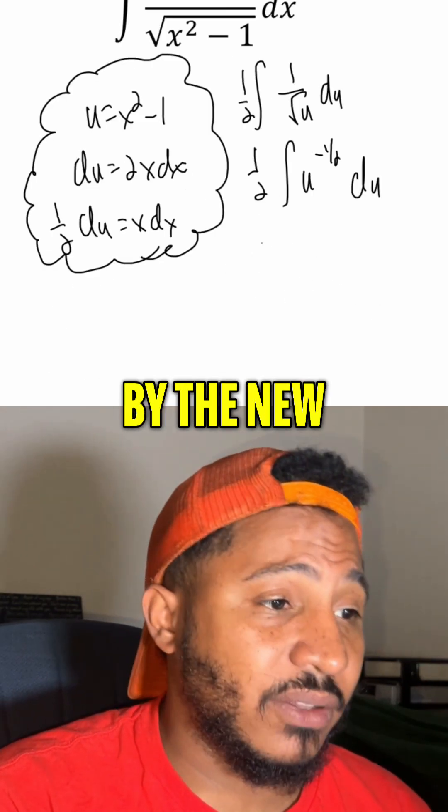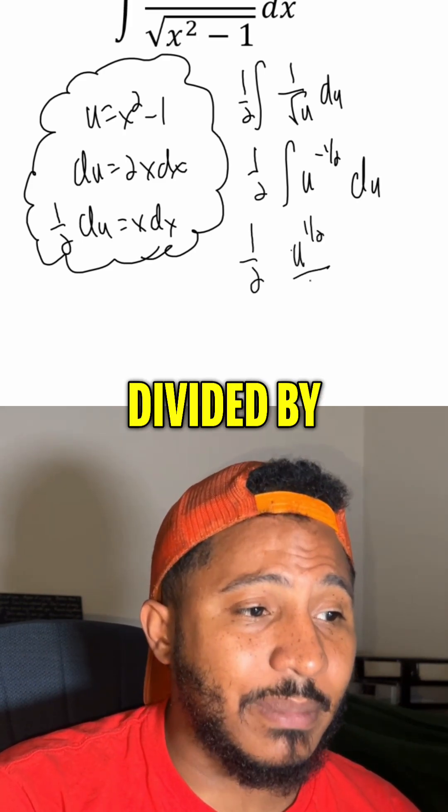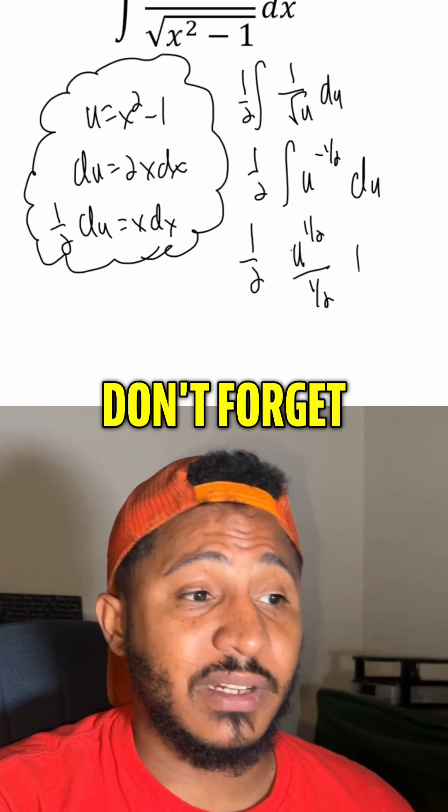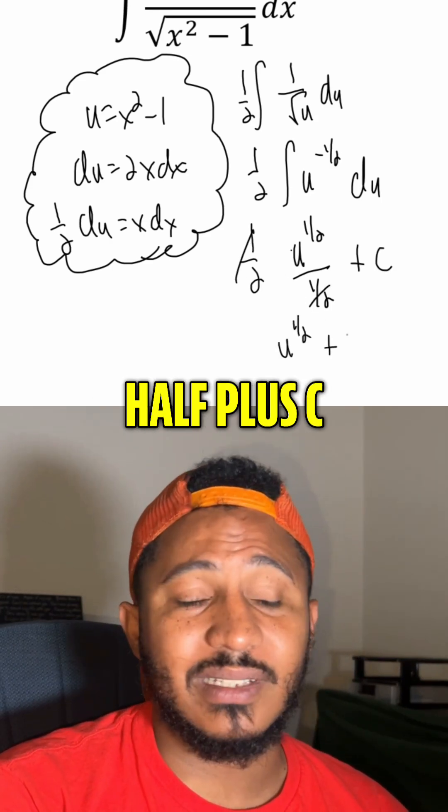Integrated, we add 1 to the power divided by the new power. So, 1 half u to the 1 half divided by 1 half. Don't forget the plus c. And this 1 half and this 1 half cancel, so we end up just getting u to the 1 half plus c.